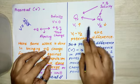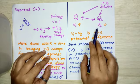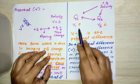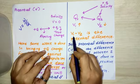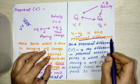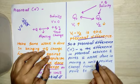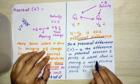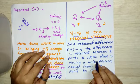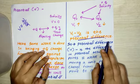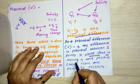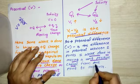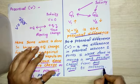If we are trying to find the difference in potential, that difference in potential is known as potential difference. The difference in potentials between two points is known as potential difference, and it is also equal to the work done in moving a unit positive charge from one point to another.